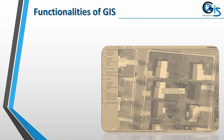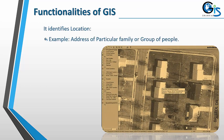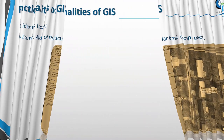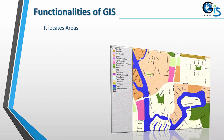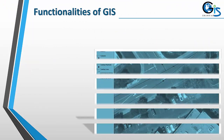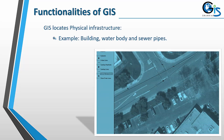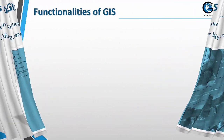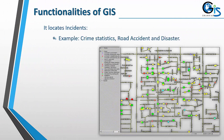Now let's see the functionalities of GIS. GIS identifies location — for example, the address of a particular family or group of people. It locates areas — for example, land use and area boundaries. GIS locates physical infrastructure — for example, buildings, water bodies, and sewer pipes.